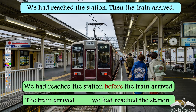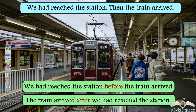We can also write this sentence in another way by interchanging the events or actions. The train arrived later than we had reached the station, so we can say: 'The train arrived after we had reached the station.' Both sentences give us the same information — we have just changed the position of the events in the two sentences.